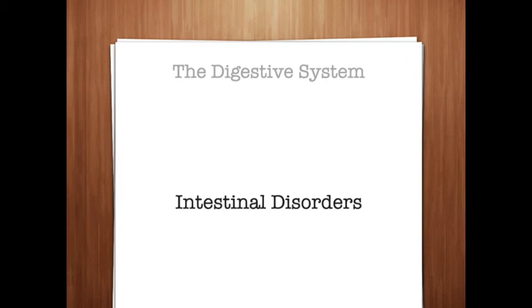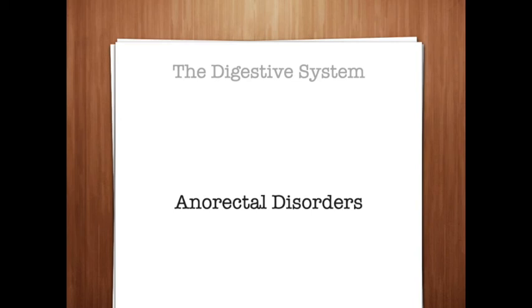Infectious diseases of the intestines may be transmitted through contaminated food and water or through poor sanitary practices. Bowel incontinence is the inability to control the excretion of feces. Constipation is a decrease in frequency in the passage of stools or difficulty in passing hard, dry stools. Diarrhea is an abnormal frequency of loose or watery stools that may lead to dehydration. Hemorrhoids, also known as piles, are enlarged veins in or near the anus that may cause pain and bleeding. Melena is the passage of black stools containing digested blood.